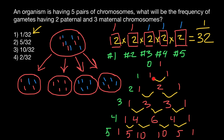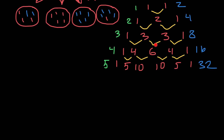Now let's add the numbers in each row. Row zero: 1. Row one: 1+1 = 2. Row two: 1+2+1 = 4. Row three: 8. You can see the pattern — the total doubles with each row. Row four: 16. Row five: 32. Now let's talk about what the numbers in each row mean.